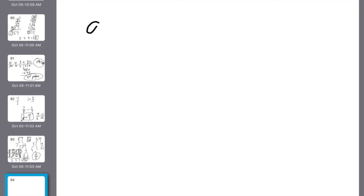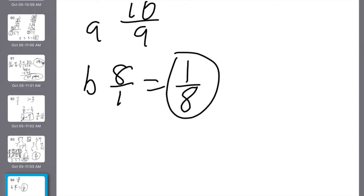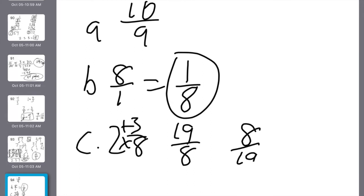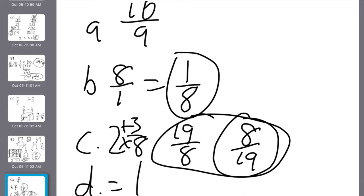Number 10. Write the reciprocal of each number. So, I take 9 tenths and I flip it to 10 over 9. B, I take 8. 8 is literally written like this. So, the reciprocal is 1 eighth. C, we're practicing reciprocals of 2 and 3 eighths. Make improper. 16 plus 3 is 19 eighths. Then reciprocal. 8 over 19. D, what is the product of 2 and 3 eighths and its reciprocal? Any number times its reciprocal equals 1. E, what rule do you know about reciprocals that could help you answer D? I know inverse property. That's what the rule is. Any number times its reciprocal equals 1.